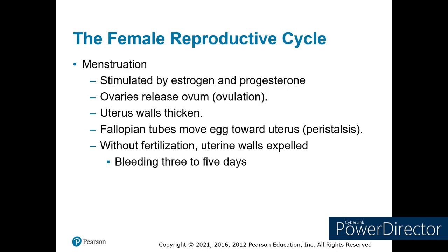Once the ovum is released from the ovaries, estrogen and progesterone are also released, causing the uterine wall to thicken. If a fertilized egg reaches the uterus, it can implant into the uterine walls. If this does not happen, the uterine walls are expelled in your typical menstrual cycle, which lasts three to five days.